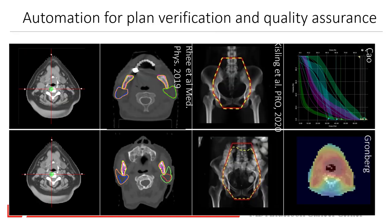QA in terms of safety and quality is really just around the corner. It may not be quite as close as auto-contouring in many cases, but we're really close to using these tools to make our processes safer and more effective. These are some examples from the last few slides of what automated QA can offer in clinical practice.